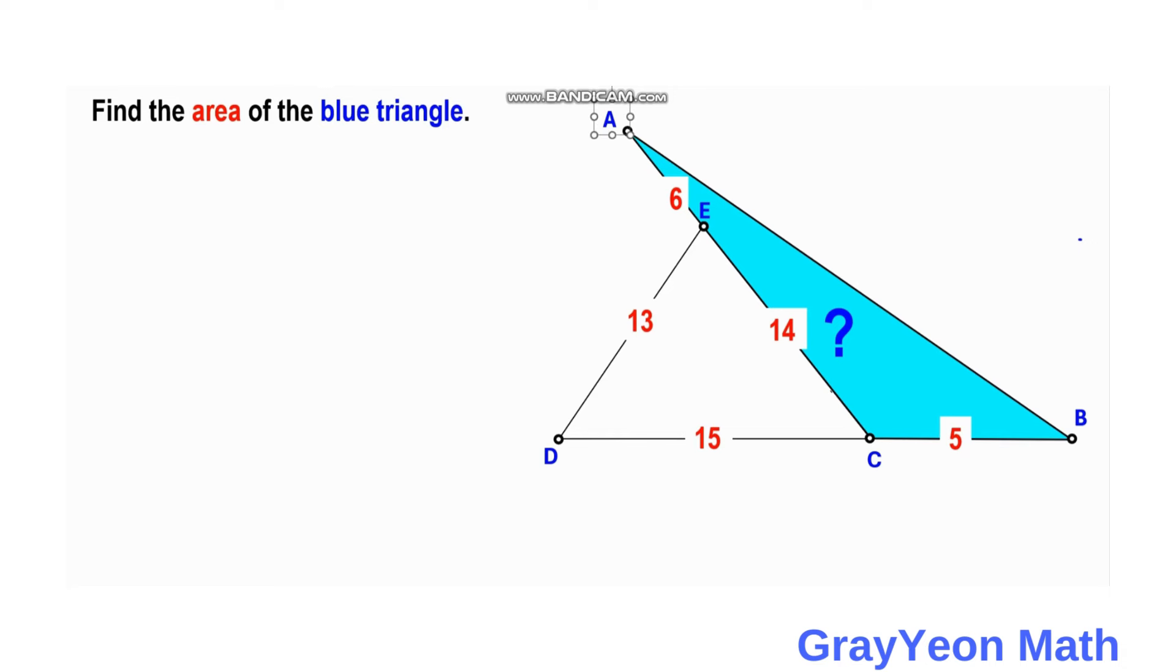First thing that we may do is we can actually draw a line that is perpendicular to this segment EC from point D. Next, we draw a line from C. We continue this segment EC, and from point B, a line also perpendicular to the extended EC.